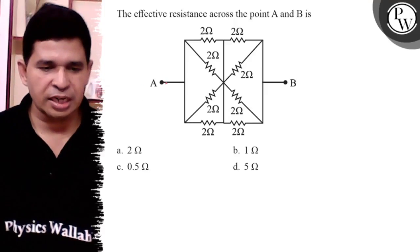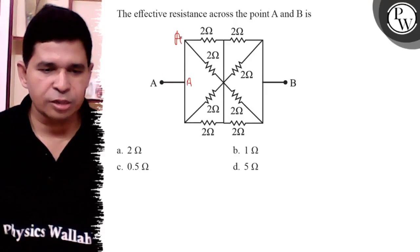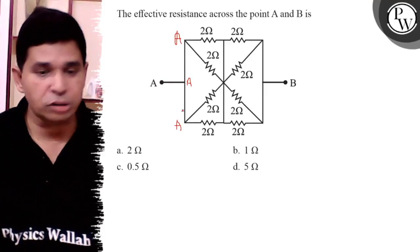Hello, let us see this question. It is point A. It is also A, it is also A because all are short-circuited.